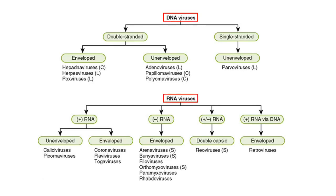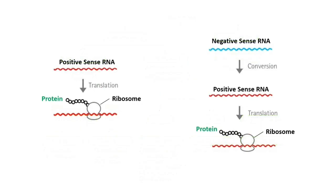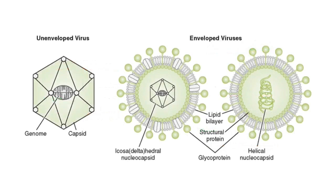These genetic materials can be single-stranded or double-stranded. RNA viruses can also be divided into positive sense and negative sense RNA viruses. The sense of a DNA or RNA refers to the nature of the role of the strand. Positive sense viral RNA can be immediately translated into protein by the host cell ribosome, while negative sense RNA needs to be converted to positive sense RNA before translation or protein synthesis. Novel coronavirus has a positive sense RNA as its genetic material, and all these can be further classified into un-enveloped and enveloped viruses.